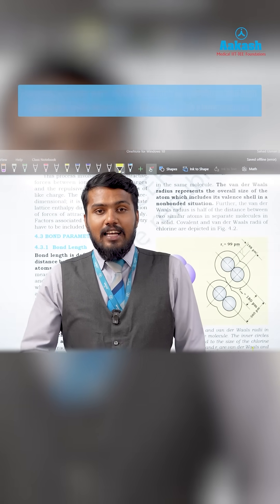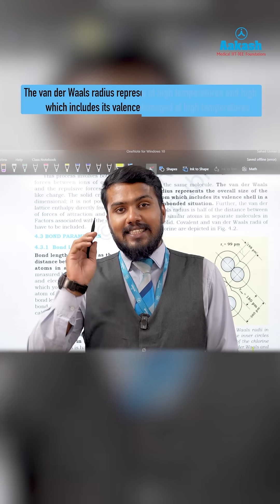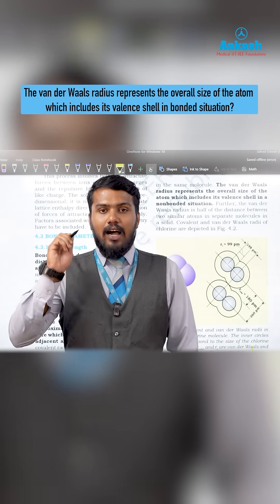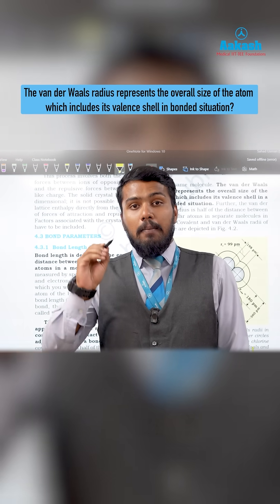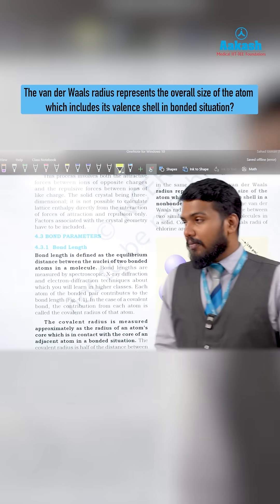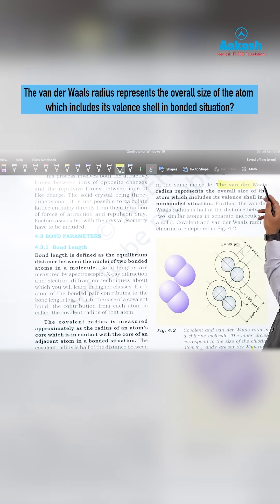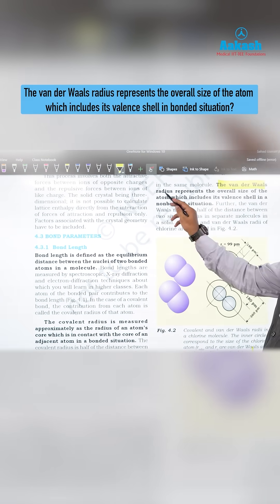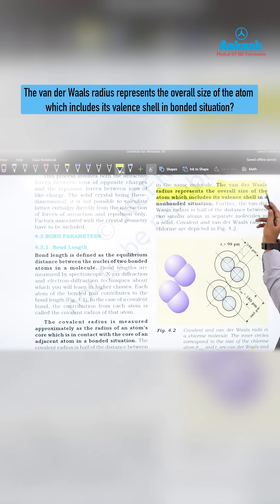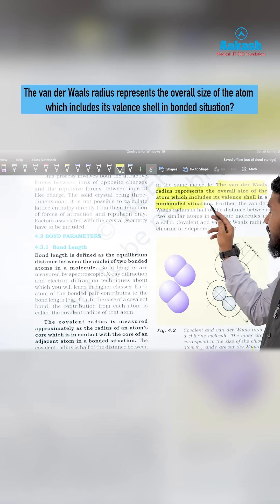The statement is: 'The Van der Waals radius represents the overall size of an atom, which includes its outermost shell in a bonded situation.' The correct statement, however, is that the Van der Waals radius represents the overall size of the atom which includes its valence shell in a non-bonded situation.